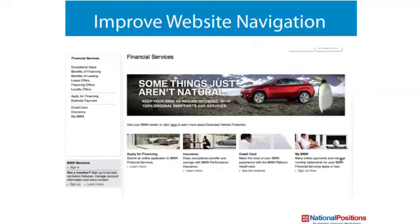Looking at this slide, the takeaways: it's very logical, very user-friendly, it's simple. When in doubt, keep it simple. It's got a very clean, appealing navigation on the left-hand side of the bar, and it's optimized for keywords as the title of each category page — financial services, benefits of financing, benefits of leasing, lease offers, financial offers, loyalty offers, applying for financial payments. These are actually keywords, which helps rankings. Optimizing your website nav bar is part of improving website navigation. You want to keep it simple — tone it down and take away a lot of the clutter you'll find on a website.